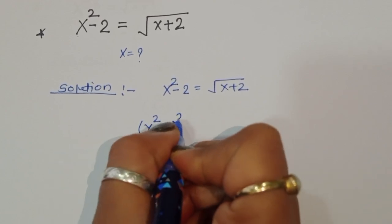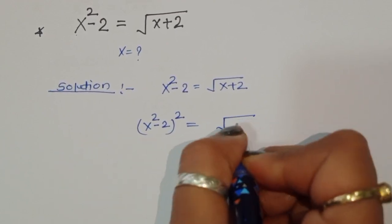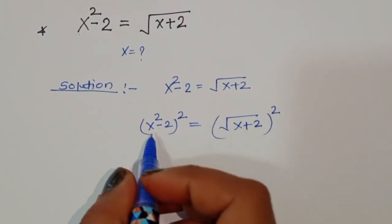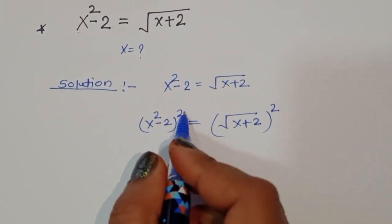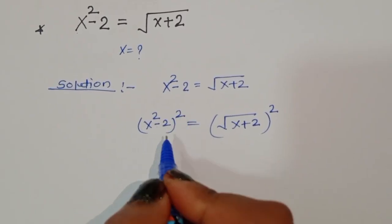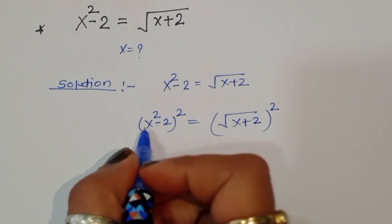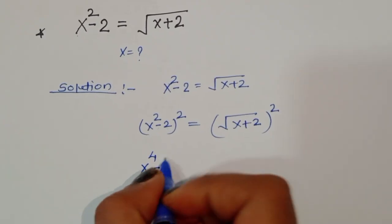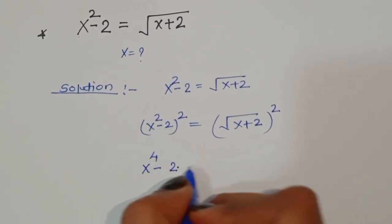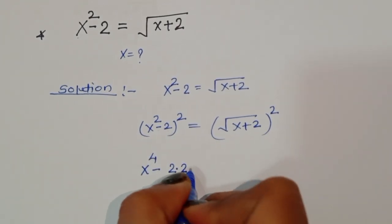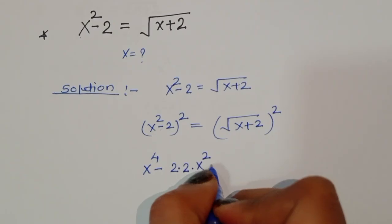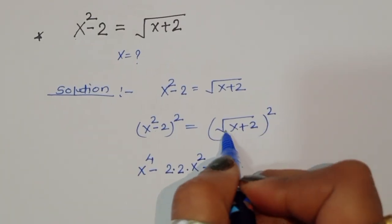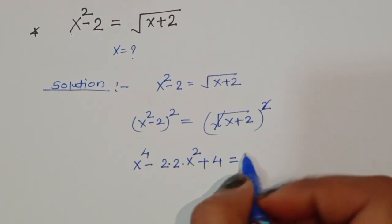Taking square on both sides: x squared minus 2, whole square, is equal to square root of x plus 2, whole square. We apply the a minus b whole square formula: a squared minus 2ab plus b squared. So we get x power 4 minus 2 times 2 times x squared, and b squared is 2 squared which is 4. The square root is cancelled, giving x plus 2.